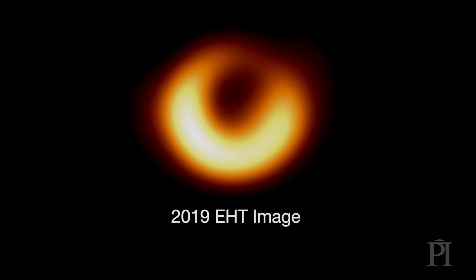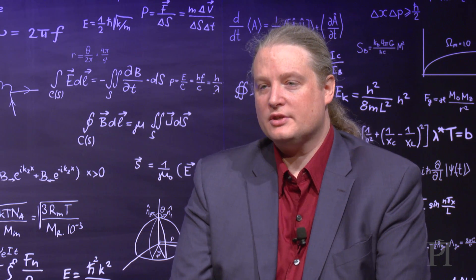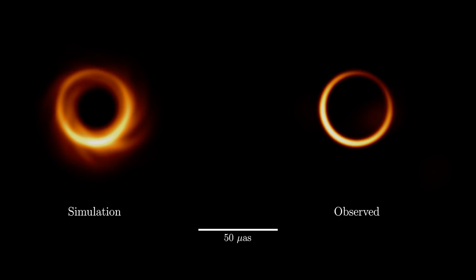What we've done here is we have put into our algorithms the fact that we have a strong expectation from theory that this ring that we saw in 2019 should really be much, much sharper. By virtue of knowing what we are potentially looking for, we can turn off the bits that are getting in the way.